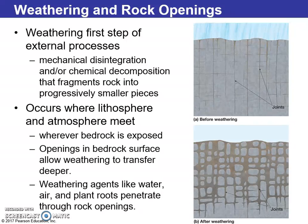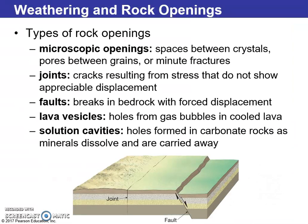Weathering is the first step of external processes. We really have mechanical disintegration and chemical decomposition. We have types of rock openings: very small spaces between crystals, major cracks, points of stress — which we see below — and we have faults, which are usually at an angle. Shifting in bedrock is a major foundation movement. Lava vesicles are holes from gas bubbles in cooled lava, and we also have solution cavities.